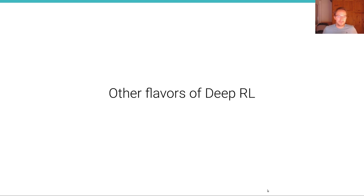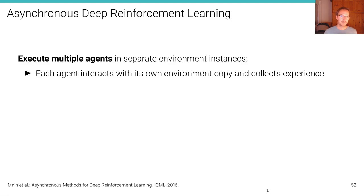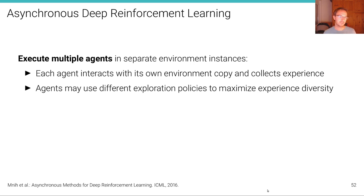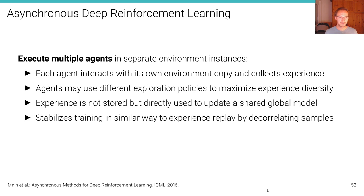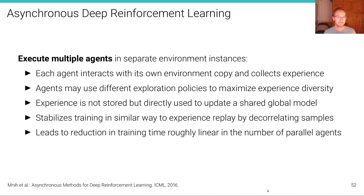There are many other flavors of deep RL. One is asynchronous deep reinforcement learning from ICML 2016: multiple agents execute in separate environment instances, each interacting with its own copy and collecting experiences using different exploration strategies. Experience is not stored but directly used to update a shared global model. This stabilizes training similarly to experience replay by de-correlating samples and reduces training time roughly linearly with the number of parallel agents.